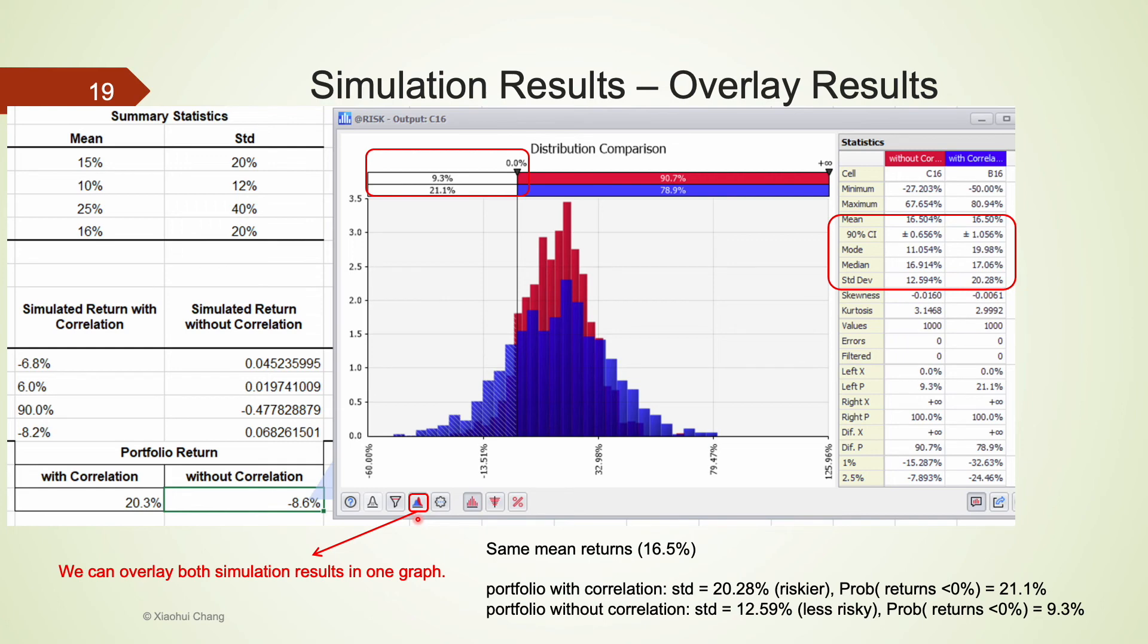Both portfolios with and without correlation have the same average return of 16.5%. But the portfolio with correlation has a larger standard deviation of 20.28%, whereas the portfolio without correlation has a standard deviation of 12.59%. The portfolio with correlation also has a higher chance of getting negative returns.